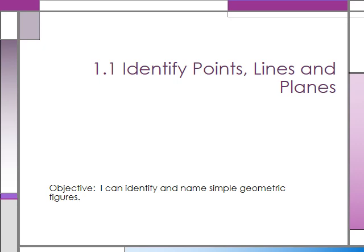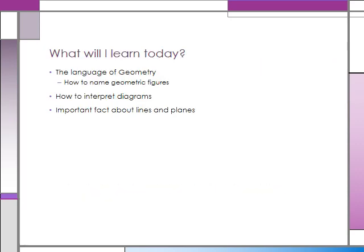We're going to talk about points, lines, and planes today, learning the specific language of geometry — it's like studying French or Spanish, you've got to know the language. We're going to learn how to interpret diagrams and learn important facts about lines and planes. Many of these facts are called postulates, which are things assumed to be true, and theorems, which are things that can be proven.